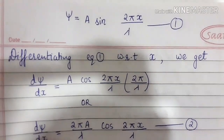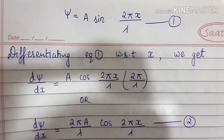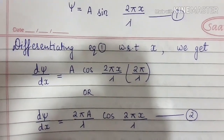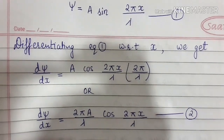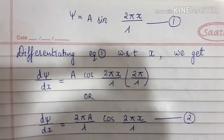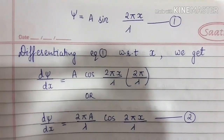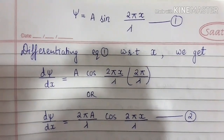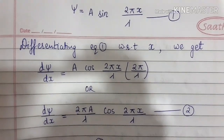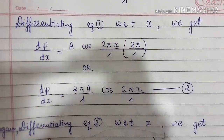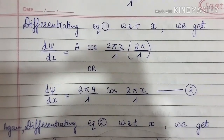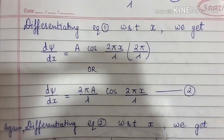Differentiating equation 1 with respect to x, we get d psi upon dx equal to A cosine of 2 pi x upon lambda, multiplied by 2 pi upon lambda. We can also write this as d psi upon dx equal to 2 pi A upon lambda, cosine of 2 pi x upon lambda.